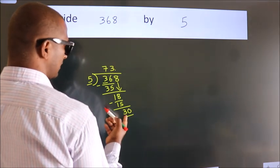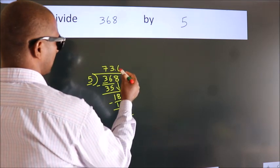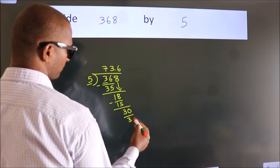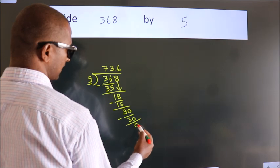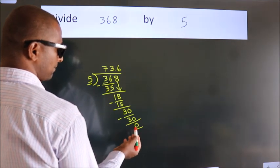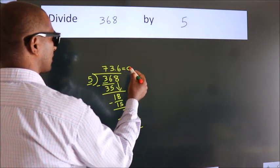When do we get 30 in the 5 table? 5 times 6 is 30. Now, we subtract. We get 0. We got remainder 0, so this is our quotient.